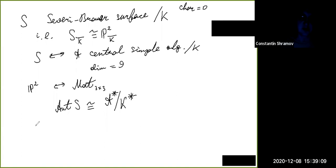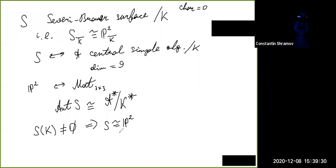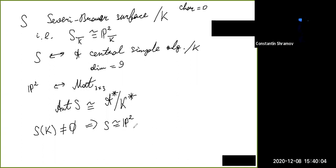You can express the automorphism group of a Severi-Brauer surface s in terms of its corresponding algebra A: it will be the group of invertible elements of A quotient by the scalars. For the trivial surface this gives PGL. If a surface has a point over the base field, it is isomorphic to P² over that field. This is analogous to the situation of conics over algebraically non-closed fields — there is only one conic up to isomorphism that has a point, and there may be many others with no points.